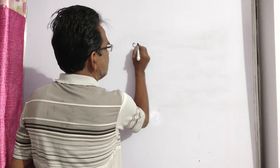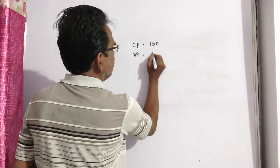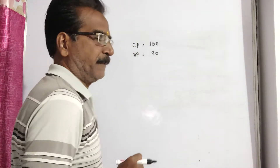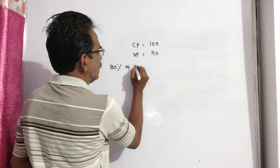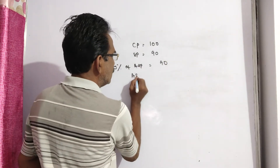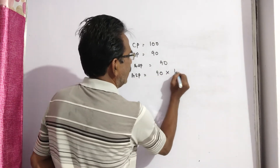Let's say cost price is 100. Then sold price becomes 90, because of 10% loss. This sold price of 90 is equal to 80% of the actual selling price. So, actual selling price is equal to 90, and actual selling price is 90 into 100 by 80.